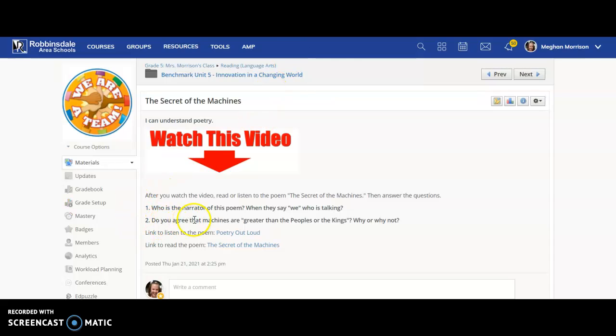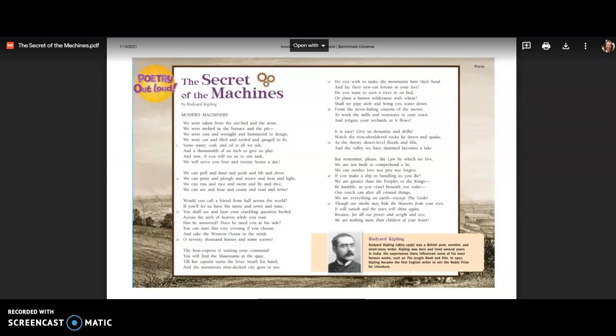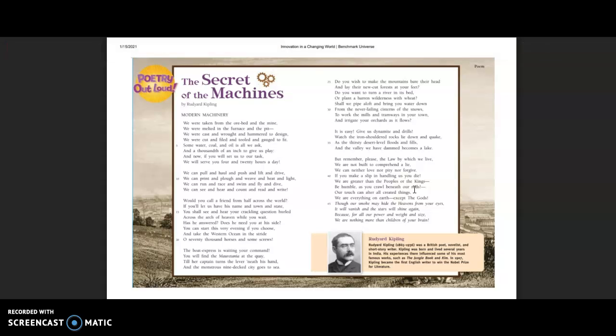The second thing is, do you agree that machines are greater than the peoples or the kings? Because in the last paragraph, it says, we are not built to comprehend a lie. So we don't understand lies. We can neither love nor pity nor forgive. So like we don't have emotion. If you make a slip in handling us, you die. We are greater than the peoples or the kings. Be humble as you crawl beneath the rods.